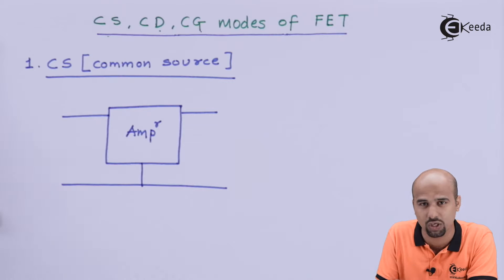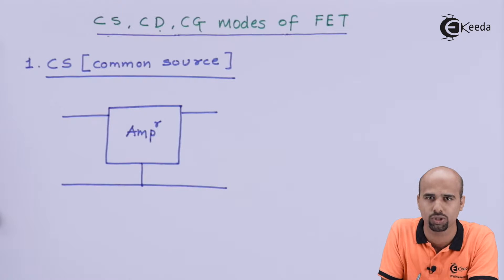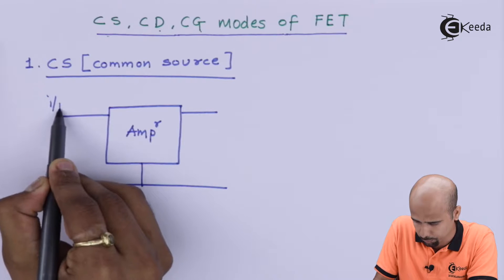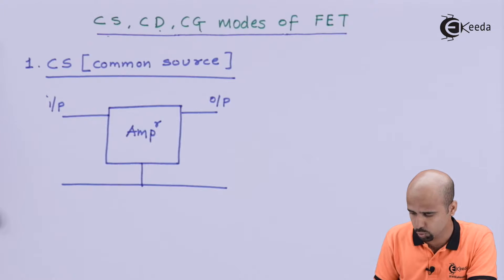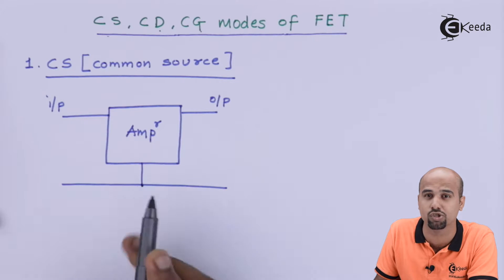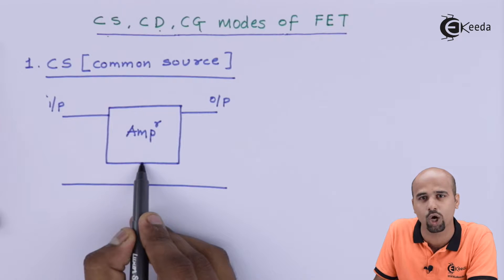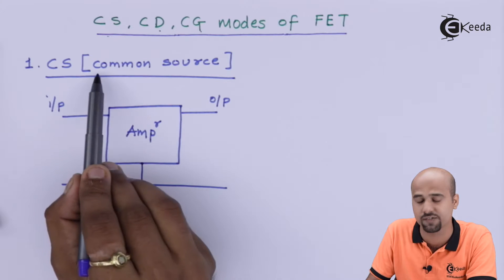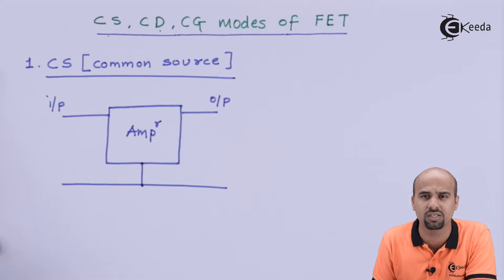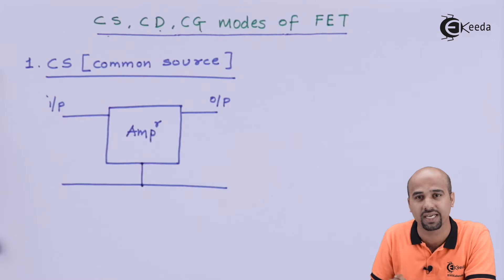If I say you got 17 marks and I got 15 marks, both must be with respect to 20 — that's the reference. Similarly, on the input and output side, whatever input we apply should have a particular reference voltage. We take one terminal as common, and on that basis we name it Common Source, Common Drain, or Common Gate — just like in BJT we have Common Collector, Common Base, and Common Emitter.